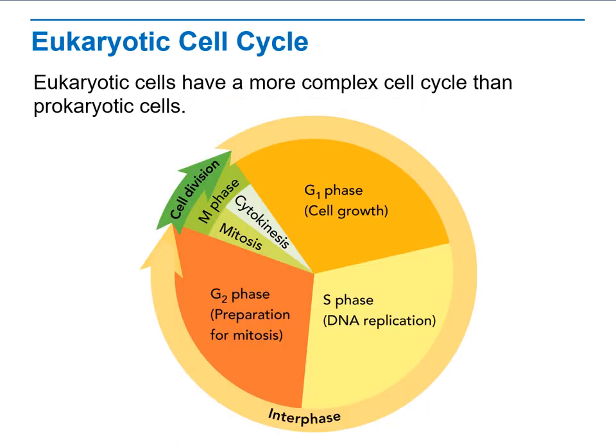In eukaryotic cells, as mentioned, the cell spends 90% of its life in interphase — the phase where it gets ready to divide. The cell goes through three phases: G1, which is cell growth; then the S phase, where DNA replication occurs; and finally the G2 phase, which is preparation for mitosis, checking that everything is ready before dividing the nucleus. After that comes the division of the cytoplasm, which we call cytokinesis.